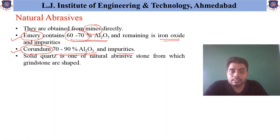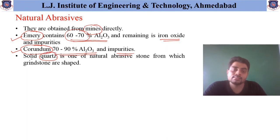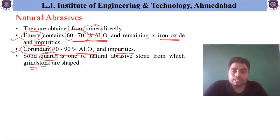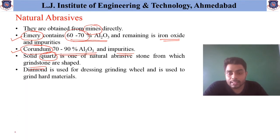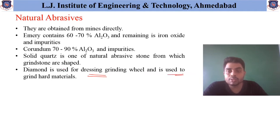Another natural abrasive is quartz, which is mainly a grindstone shaped material. Diamond is also available in natural form and it is used for dressing grinding wheels, and it is also used to grind hard materials.